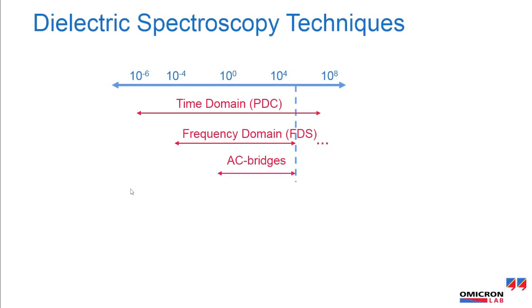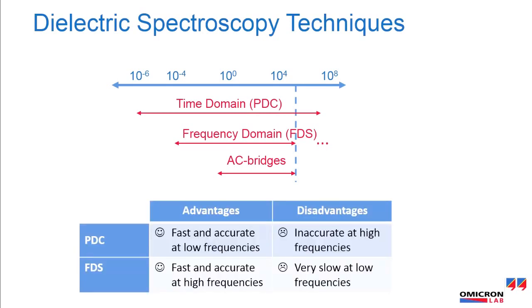There are more techniques like, for example, the AC bridges or reflectometer. The measurement technique for a dielectric material analysis depends on the frequency range to measure. The Omicron Lab dielectric material analyzer, the Spectano 100, combines the time and frequency domain method in one device.